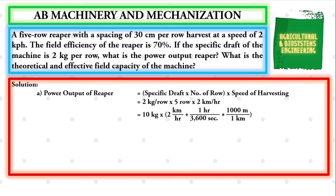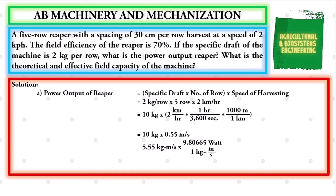We have to convert the hour unit to seconds using the conversion factor 1 hour equals 3600 seconds. Also, the kilometer unit to meters using the conversion factor 1 km equals 1000 meters. We convert and have: power output of reaper equals 10 kg times 0.55 meters per second. Getting the product, we have 5.55 kg·m/s. Since 1 kg·m/s equals 9.80665 watts, the final value for our power output of the reaper is 54.4268 watts.